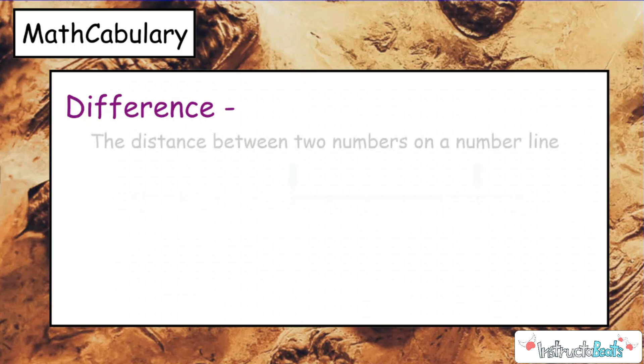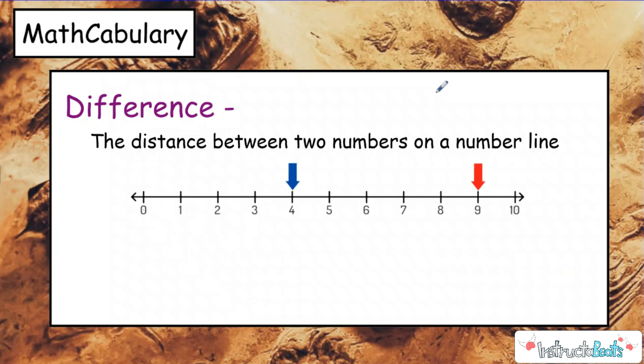The difference is the distance between two numbers on a number line. A lot of teachers use this to mean the answer to a subtraction problem, and of course subtraction is one way you can find this, but to really look at this, let's take a look at a number line. So if we're looking for the difference between four and nine on a number line, we're really thinking how far apart are they? So one, two, three, four, five. So the difference between four and nine is five.